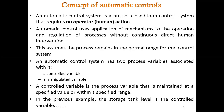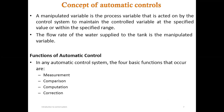An automatic control system has two process variables: the controlled variable and the manipulated variable. The controlled variable is a process variable maintained at a specific value or within a specific range — for example, the storage tank water level. The manipulated variable is acted upon by the control system to maintain the controlled variable — for example, the flow rate of water supplied to the tank.